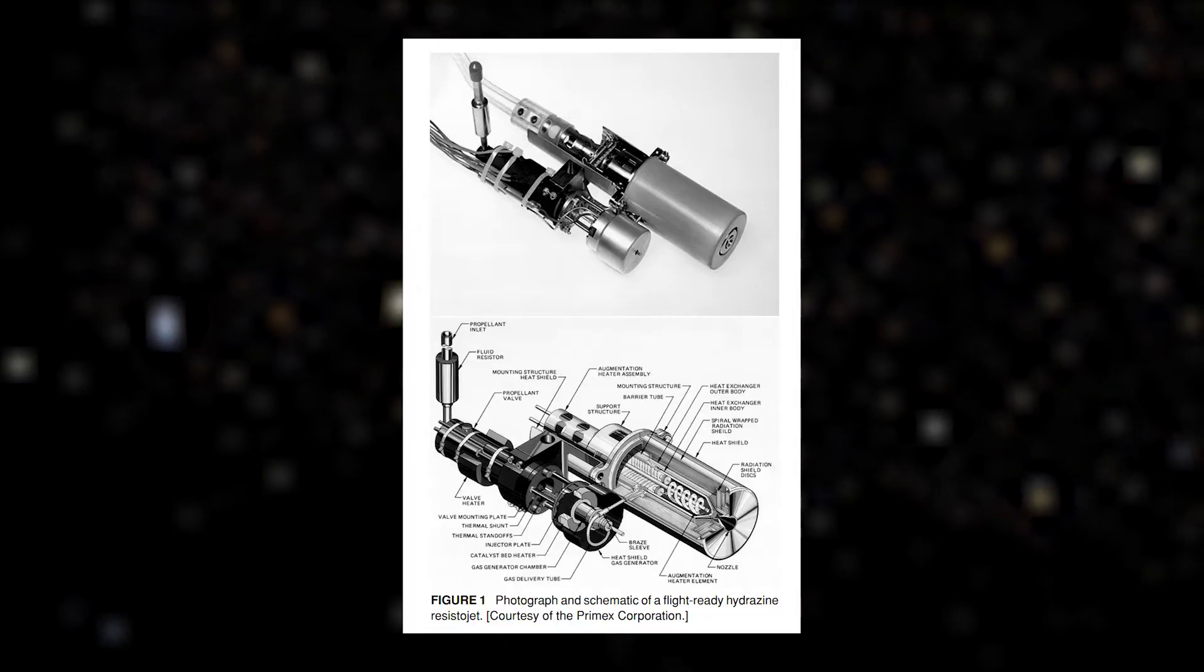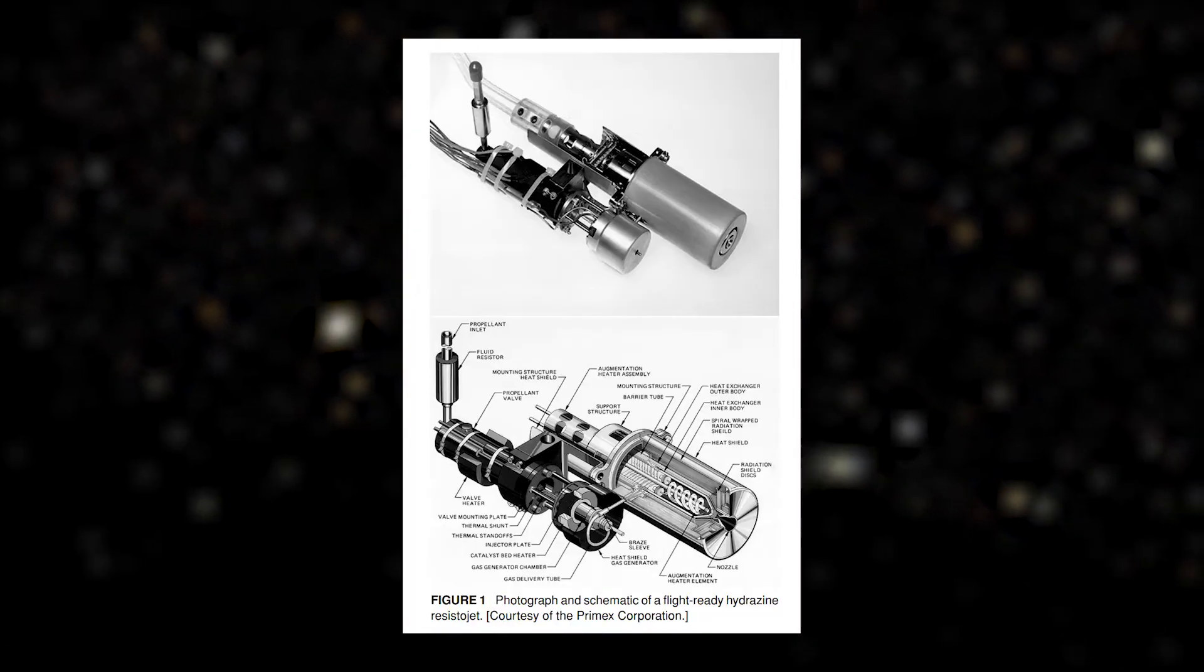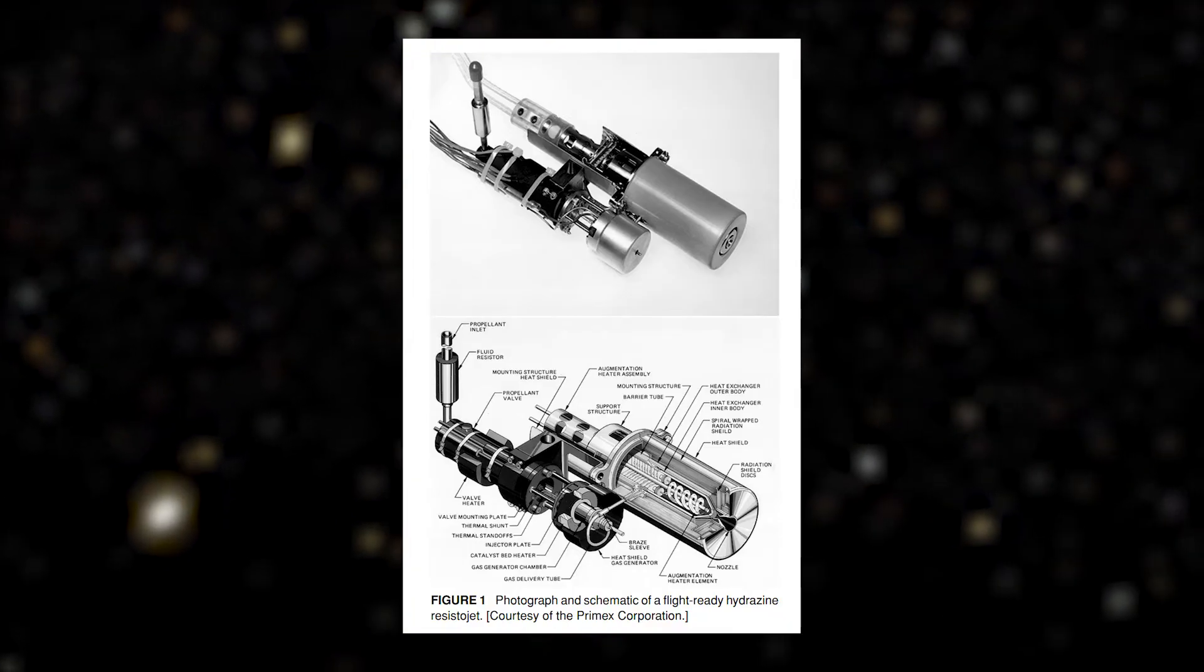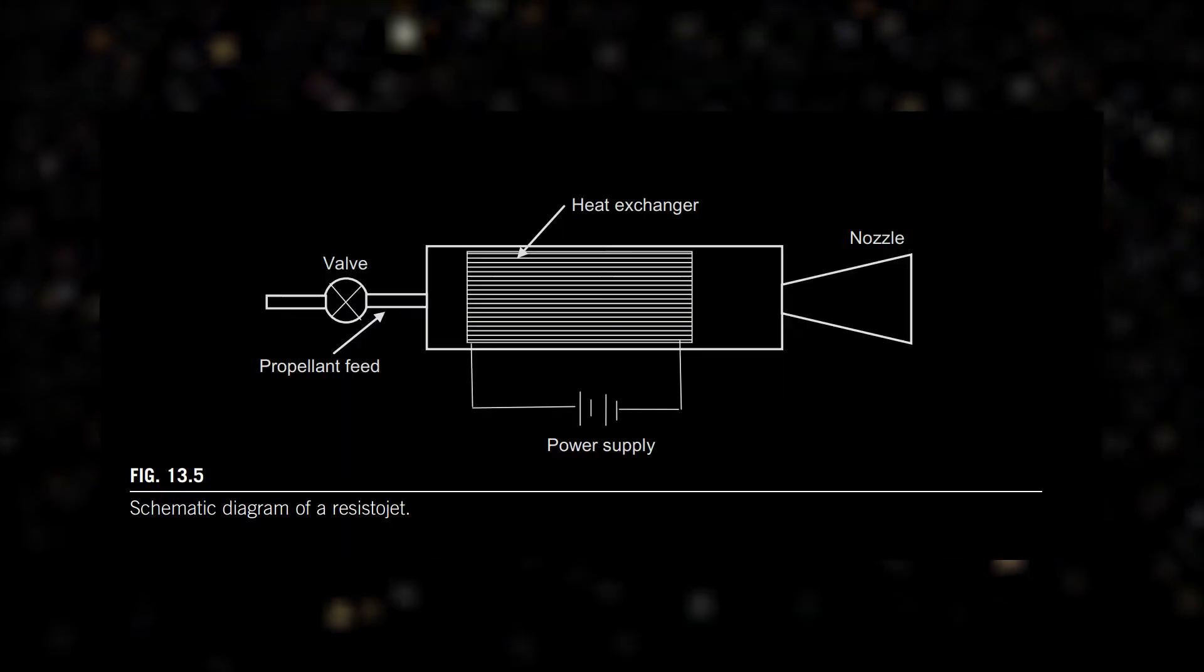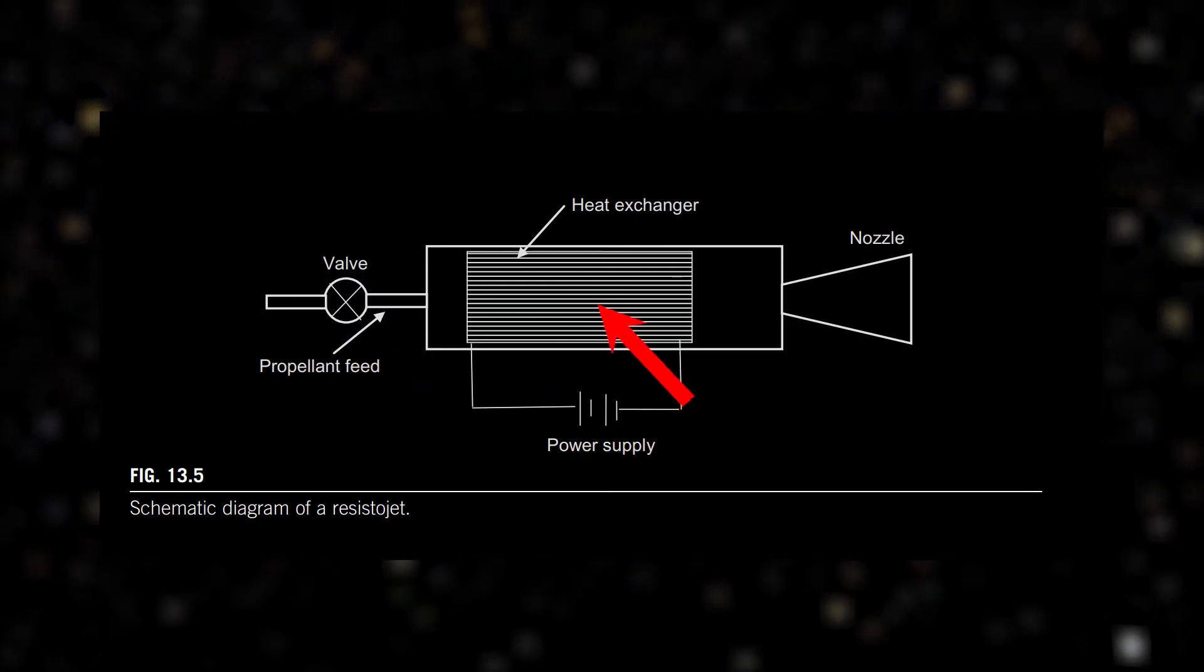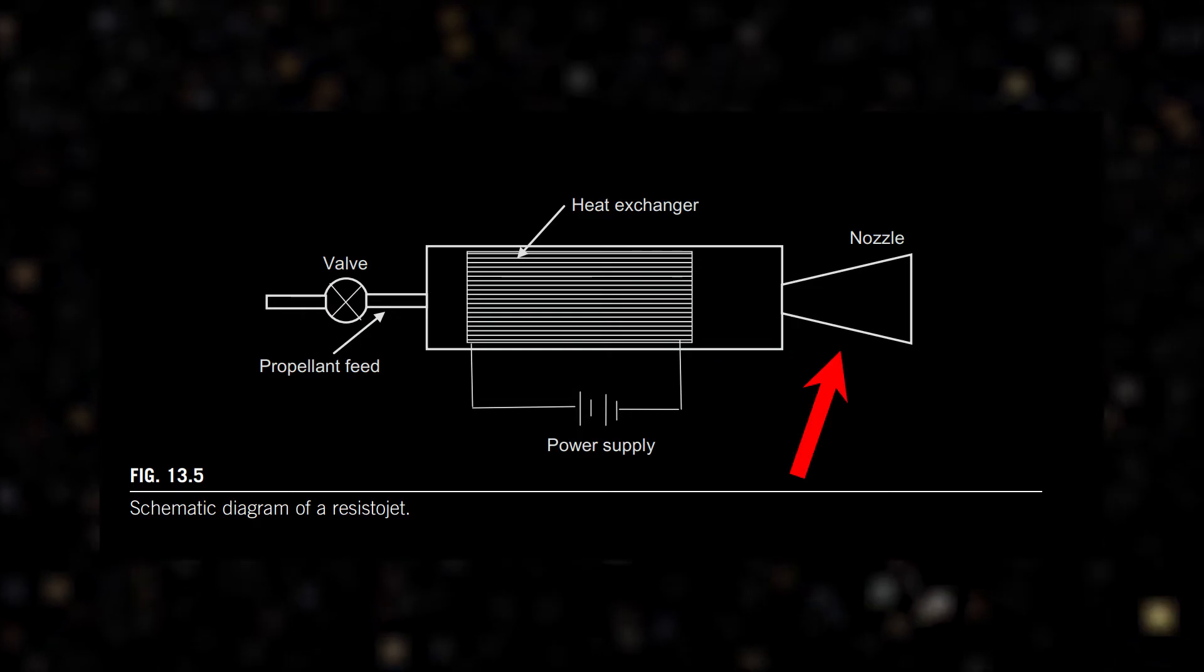Another type is resistojet. Here the propellant is heated with the surface of a solid heat exchanger, it could be a coil or the walls of a heating chamber. That's a simple schematic. Here is a propellant feed, here is a heat exchanger, and the heated gas is again exhausted through a nozzle.